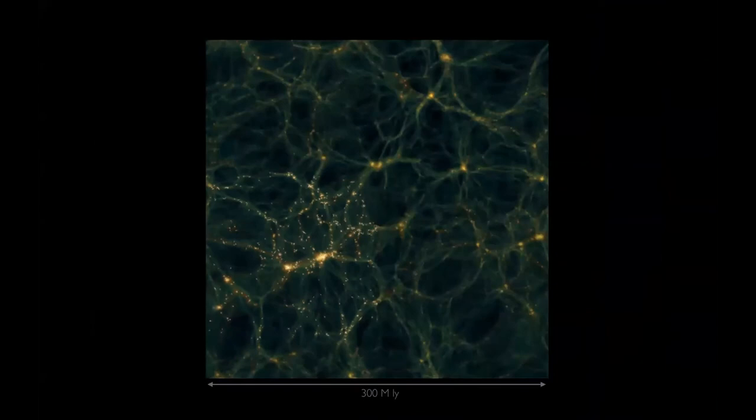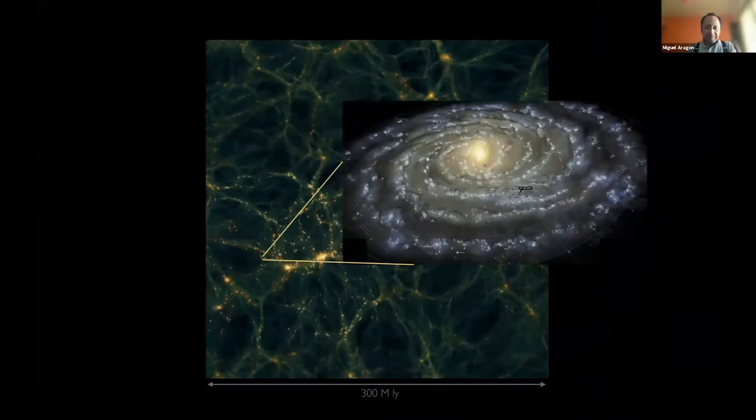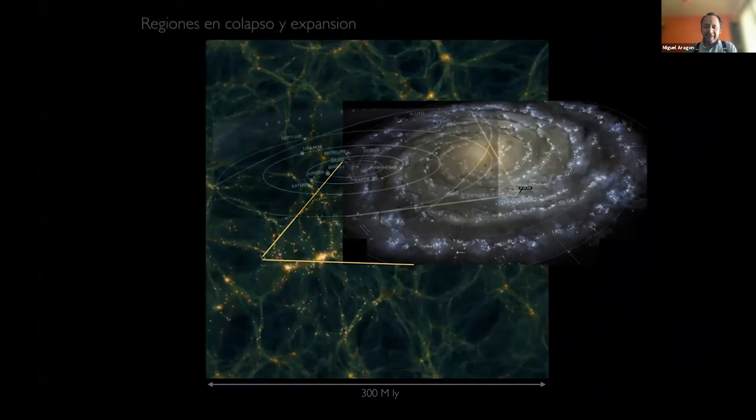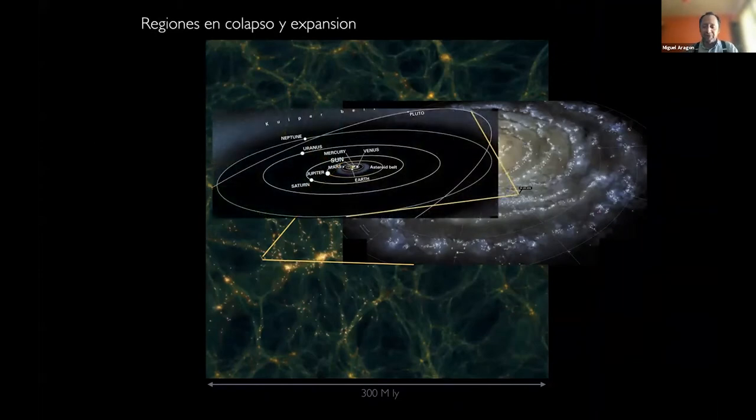So just to remind you, in this map, every little dot that you see here is a galaxy like the Milky Way. And inside every galaxy, there are billions of stars like our sun.